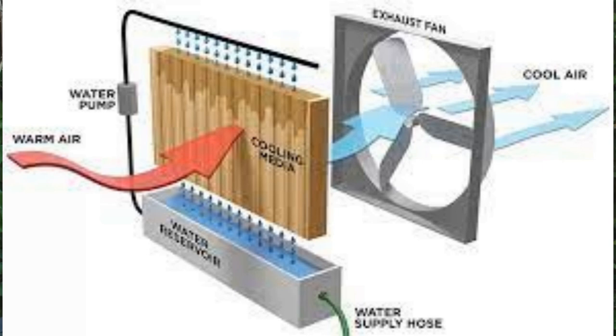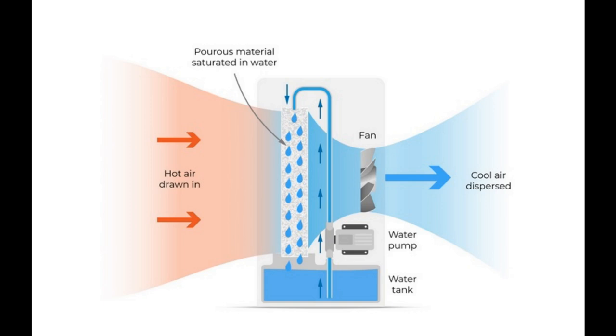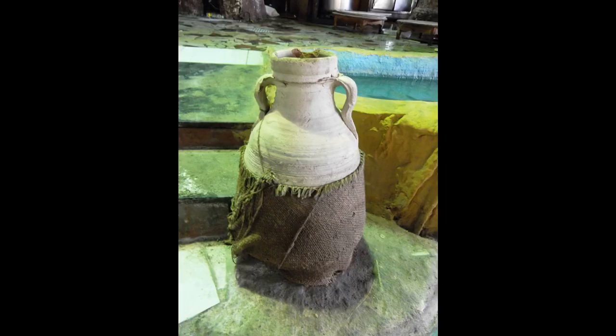Evaporative cooling is a different kind of animal. It's often called a swamp cooler, desert cooler, swamp box, or evaporative cooler, and they work on the principle of the latent heat of evaporation of water. It takes energy for water to evaporate, and that energy is drawn from the environment, cooling the air. It can actually be more efficient than refrigeration, but it's only really suitable for dry climates. In humid climates, people often complain about them not working because the water can't evaporate and therefore cool. A great example is the Egyptian quilla.